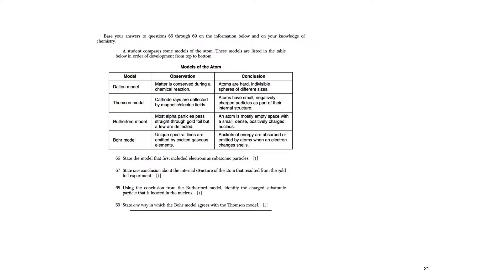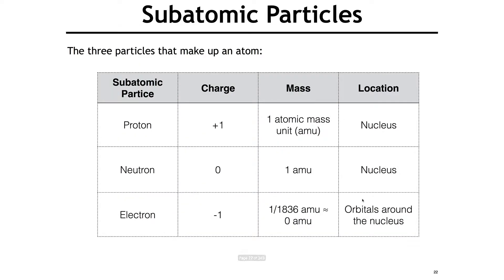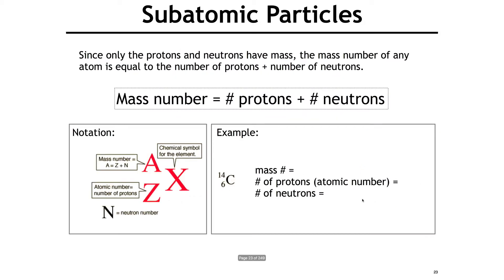Here are the subatomic particles. The proton has a charge of +1 and a mass of 1 amu, and it's in the nucleus. The neutron has no charge, a mass of 1 amu, and is in the nucleus. The electron has a charge of -1, essentially a mass of zero, and is in orbitals around the nucleus. You also need to know the notation representing an element — the bottom number is protons, and A is the mass number, which is protons plus neutrons. To find neutrons, subtract protons from the mass number. For example: mass number 14 minus 6 protons equals 8 neutrons.